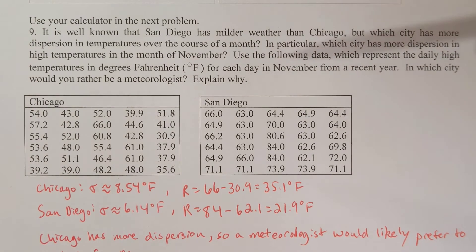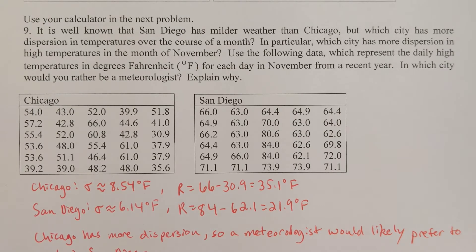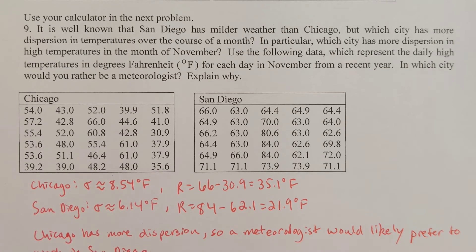In problem 9, we're going to use our calculator. It says it's well known that St. Louis has milder weather than Chicago, but which city has more dispersion in the temperatures over the course of a month? In particular, which city has more dispersion in the high temperatures in the month of November? Use the following data, which represent the daily high temperatures in degrees Fahrenheit for each day in November from a recent year. Which city would you rather be a meteorologist in and explain why?